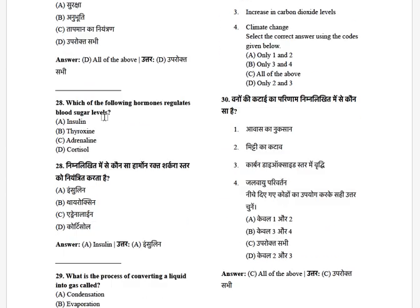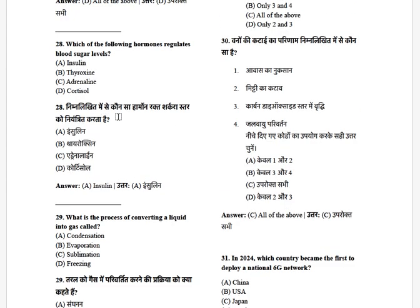Which of the following hormones regulates blood sugar level? The options are: insulin, thyroxine, adrenaline, and cortisone. The answer is insulin.